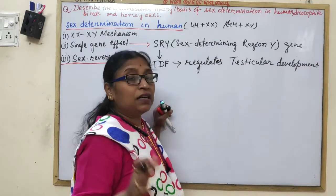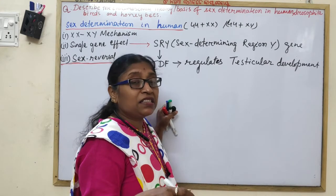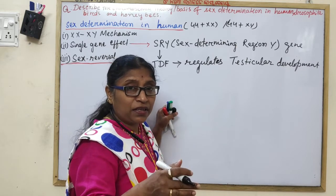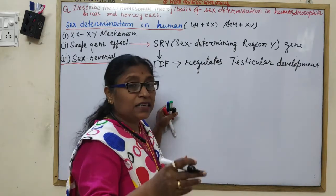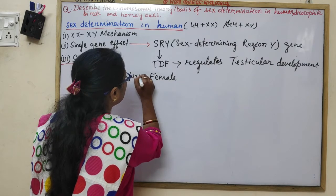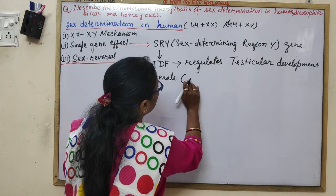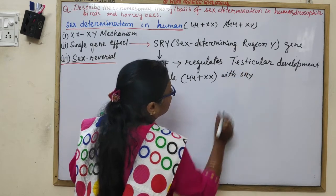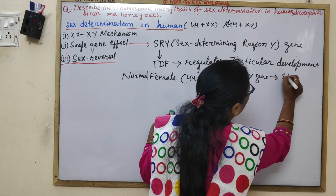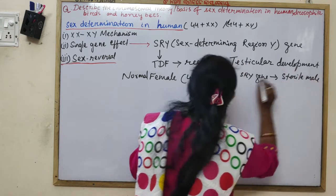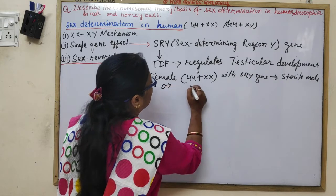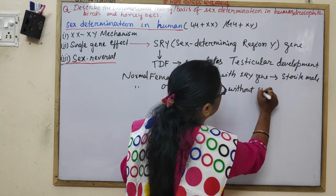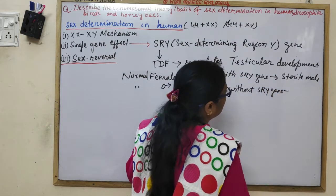When testes develop, the Sertoli cells secrete AMH (Anti-Mullerian Hormone) and Leydig cells secrete testosterone. A normal female (44+XX) with the SRY gene becomes a sterile male. A normal male (44+XY) without the SRY gene becomes a sterile female.